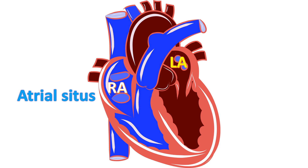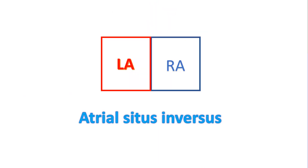Atrial situs solitus is the morphological left atrium on the left side and morphological right atrium to the right. The reverse pattern is atrial situs inversus. In atrial situs ambiguous, or atrial isomerism, both atria will be either morphological right atrium or morphological left atrium. Atrial isomerism is associated with left-right symmetry of abdominal organs, known as heterotaxia syndrome.